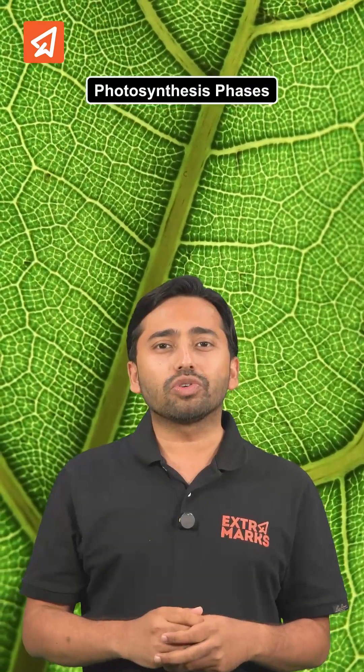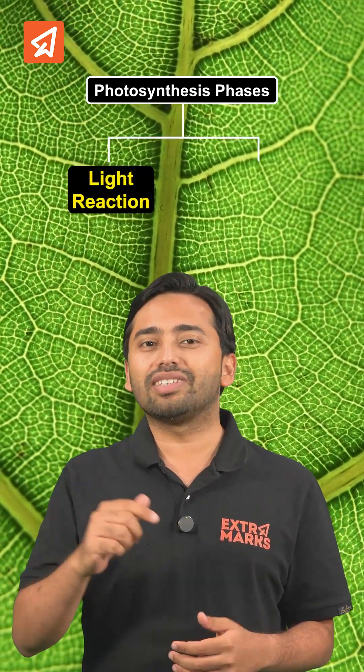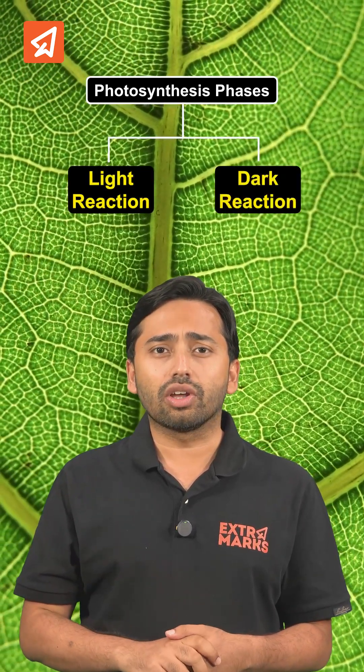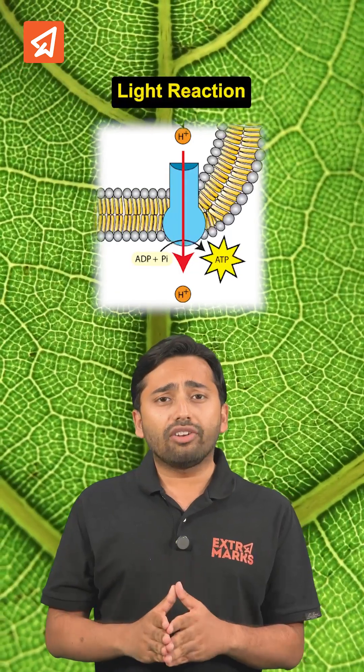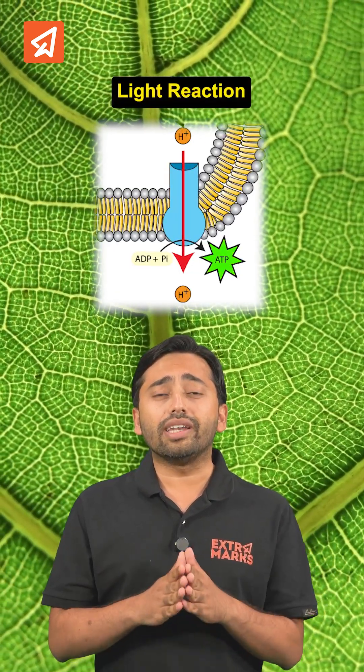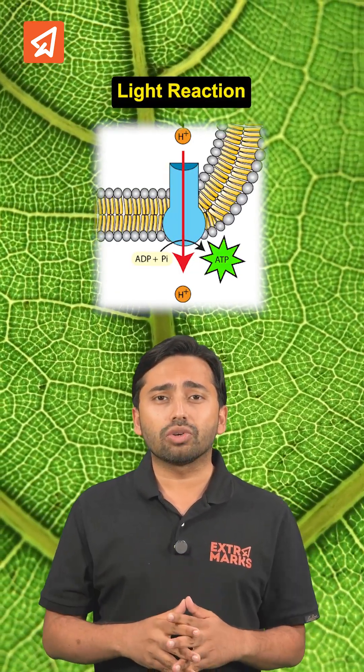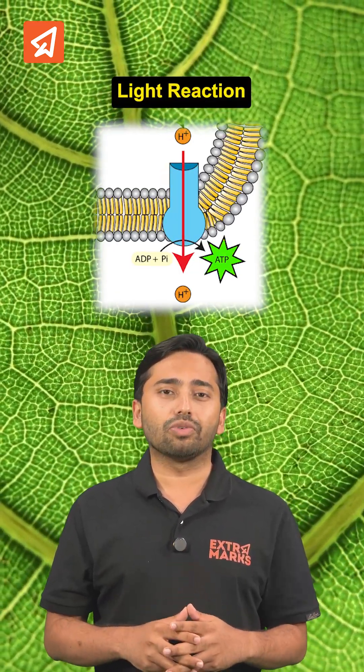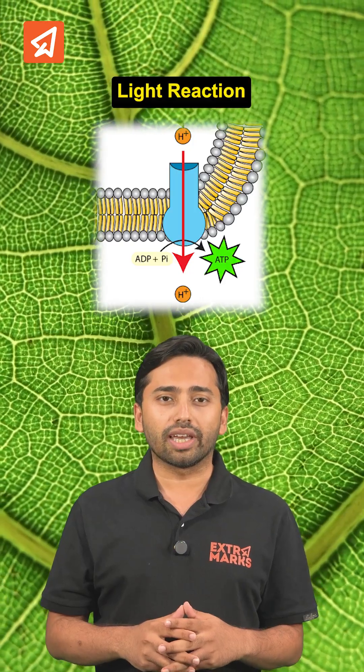We know that in photosynthesis there are two processes: the light reaction and the dark reaction. And in the light reaction, the process through which ATP is produced is called chemiosmosis.